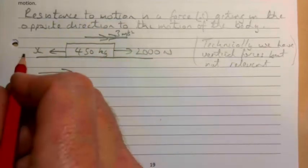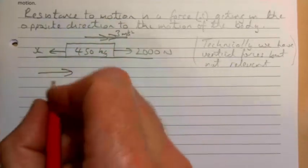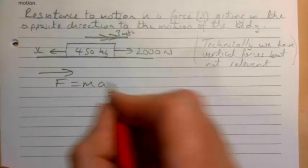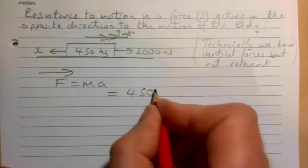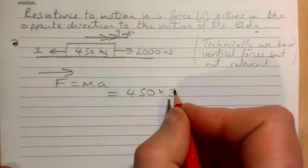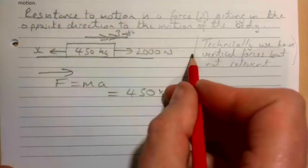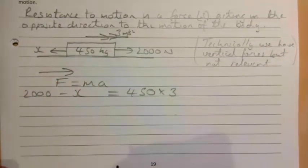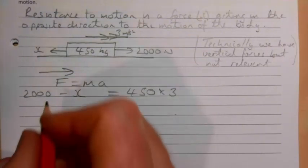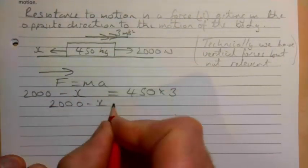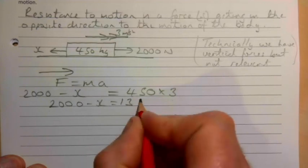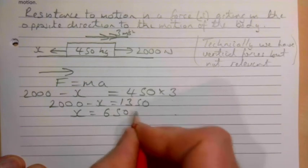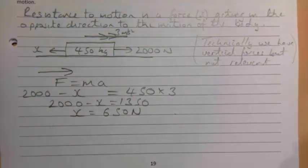Everything going up doesn't equal everything going this way because of the acceleration. So we need to use F equals MA. My mass is 450, my acceleration is 3. This direction which is the positive direction is 2000 take away X. That means 2000 take away X is 1350. That means X is 650 newtons.